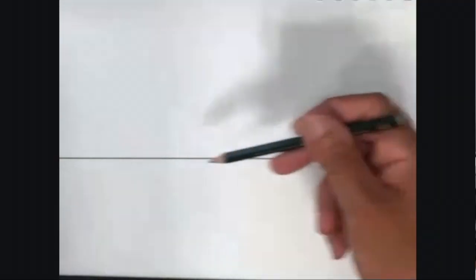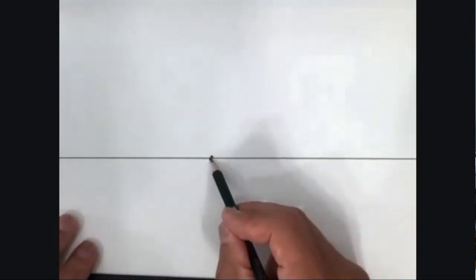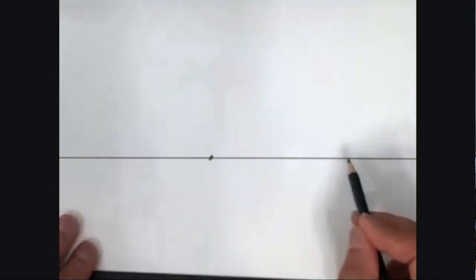The second ingredient is the vanishing point. The only rule is that it has to be on that horizon line. It could be anywhere — in the middle, to the left, to the right — as long as it's somewhere on the line. For this drawing, let's put it right in the middle to keep things as simple as possible. We'll erase that dot later. So our vanishing point and horizon line — that's two of the three ingredients.